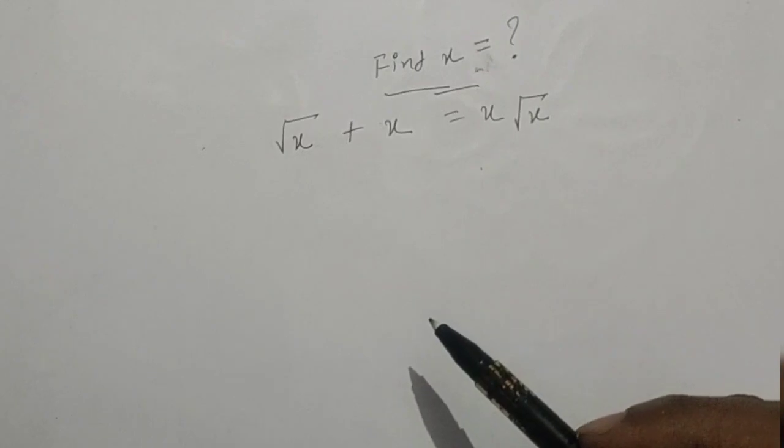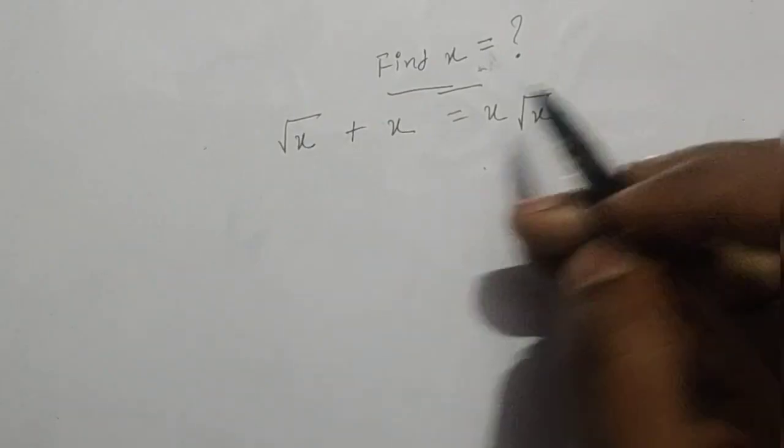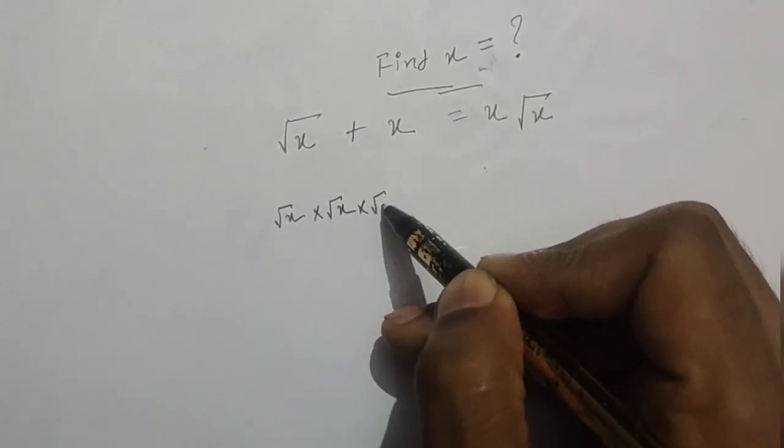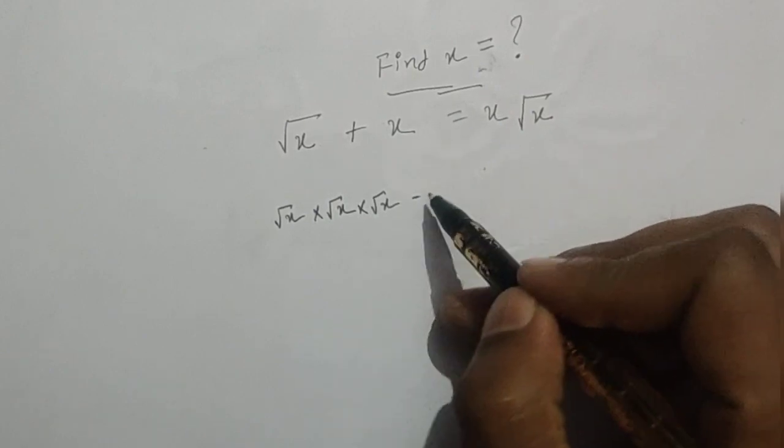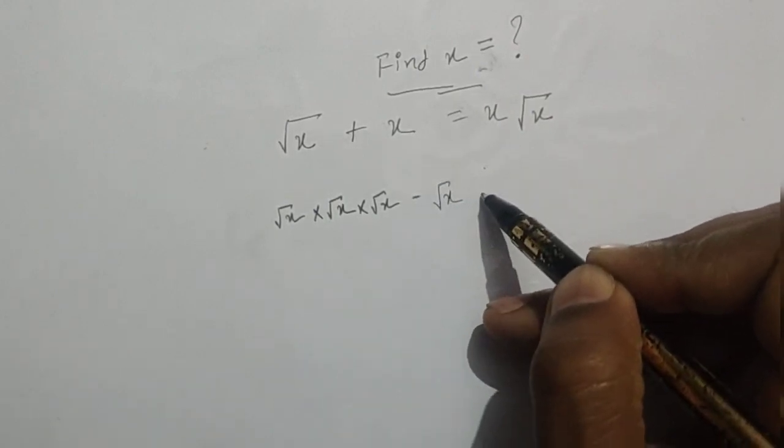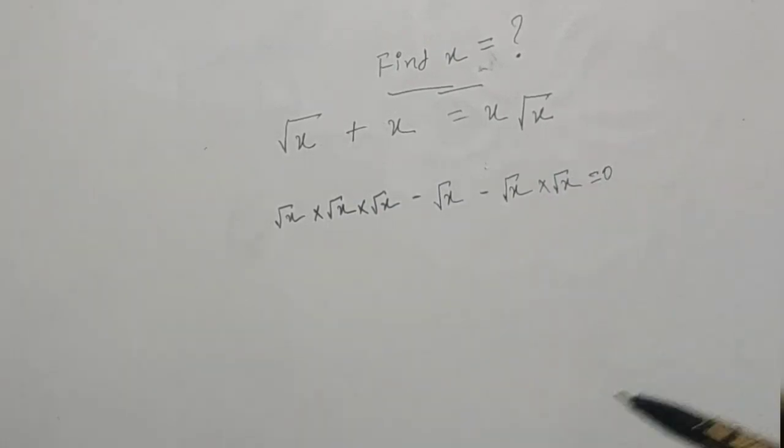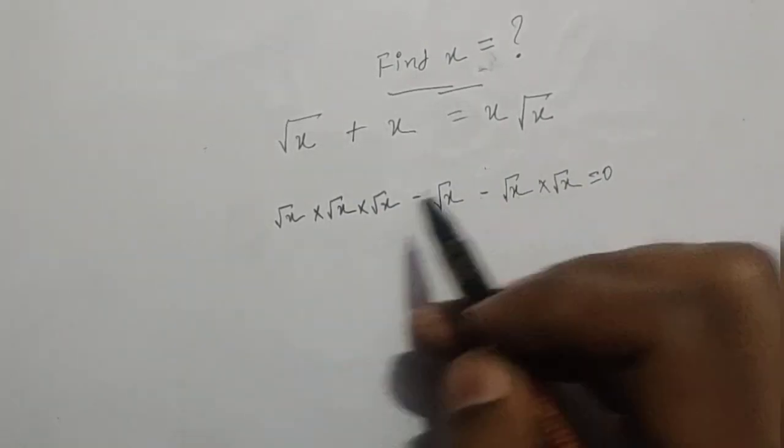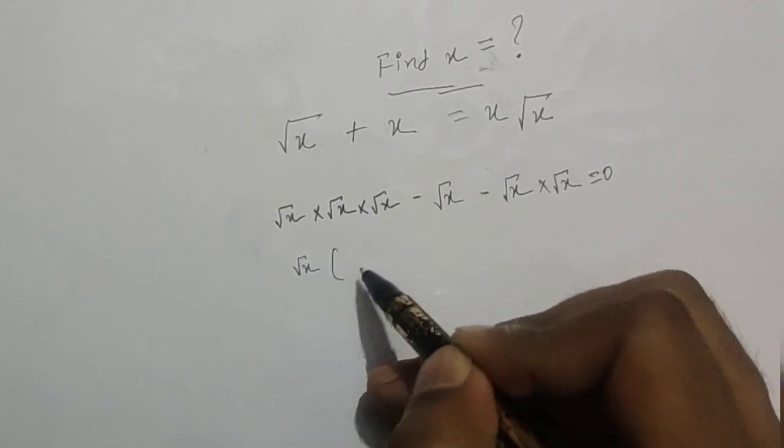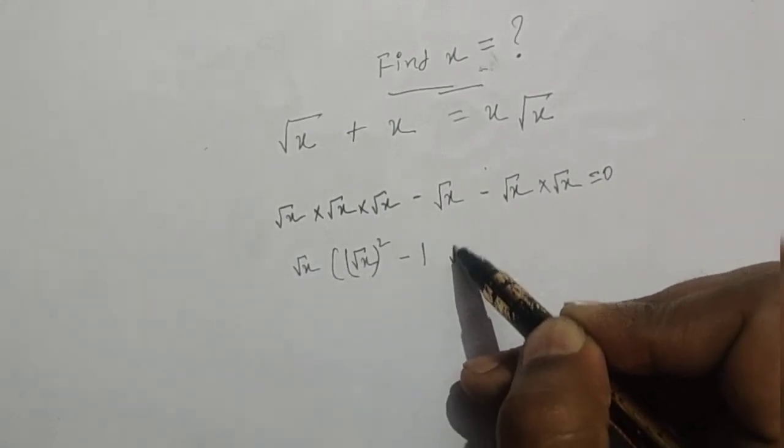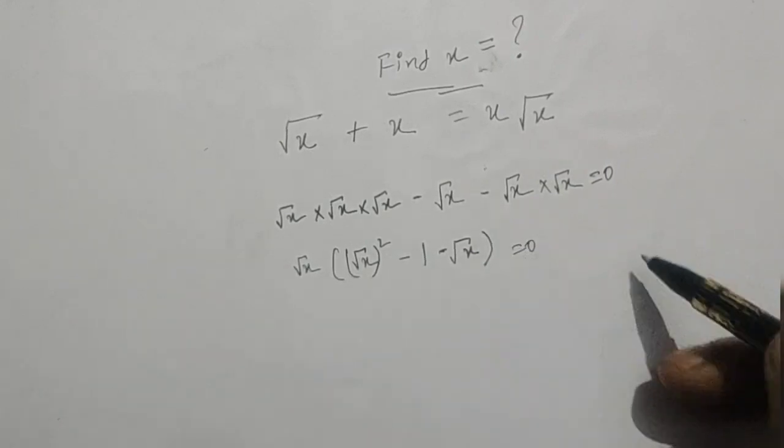I hope you tried your best and have your results in your hand. Let's see how we can tackle this question. Now I am writing this as root x root x root x minus root x minus root x root x. Now taking root x common, and here we have root x times (root x squared minus 1 root x) equals 0.